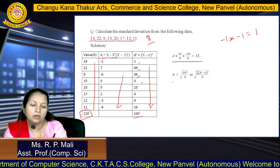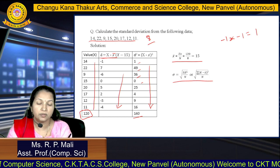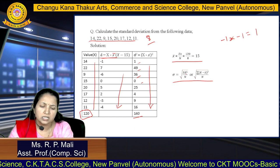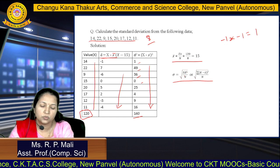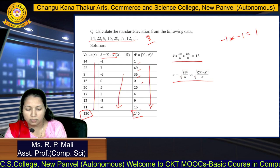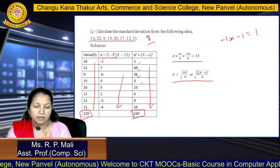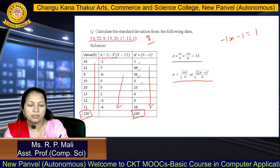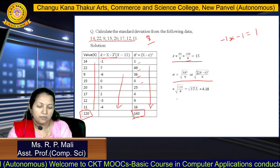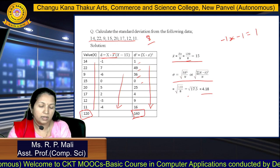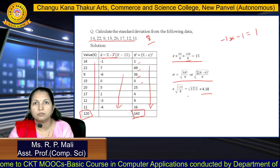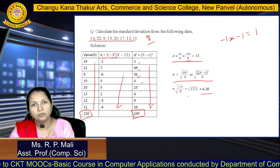The formula for standard deviation for individual series is σ = √(ΣD²/N). The summation of the D² column is 140, divided by N = 8. After calculation, you get σ = 4.18. This completes the individual series calculation.